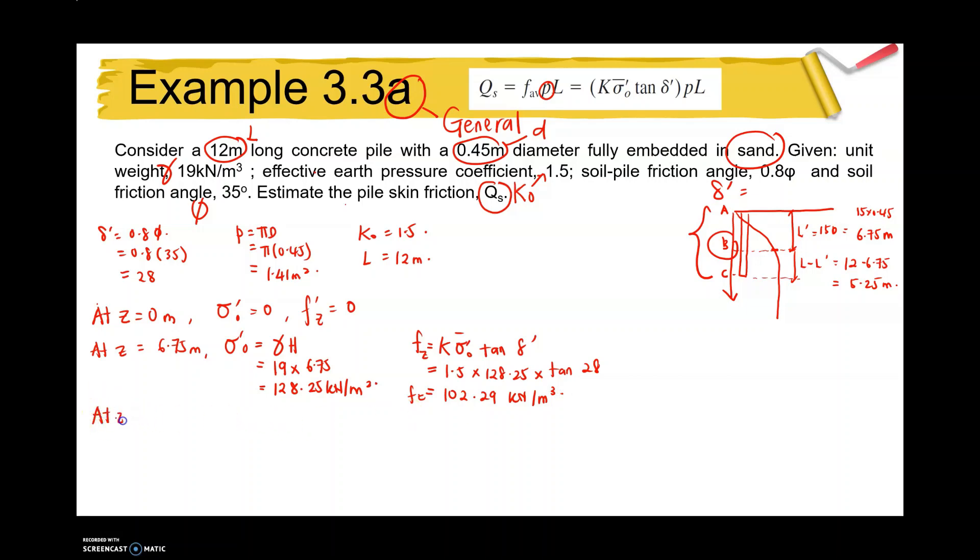The next one is at z equals 12 meters, which is, we know that as I mentioned before, F equals z which is 12 meters. So F equals F at L prime, means that 12 meters for the whole pile foundation equals F at L prime, so it equals 102.29 kilonewtons per meter cubed.